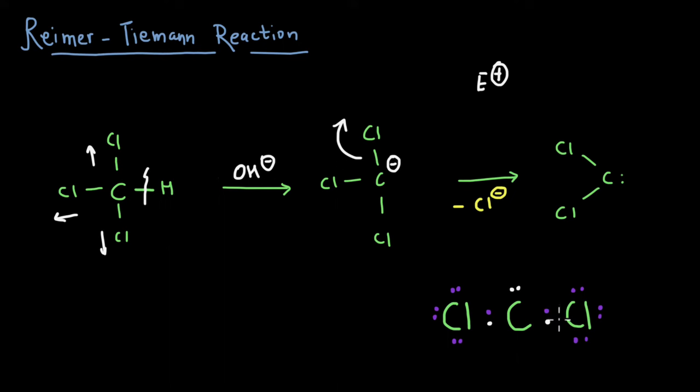And also one more thing to remember is that although this is the preparation step, CCl2 cannot actually be isolated. It is a reaction intermediate. So it is only formed when we initiate the first part of our reaction, where we take chloroform in the presence of a base. So let's see how the reaction proceeds after that.